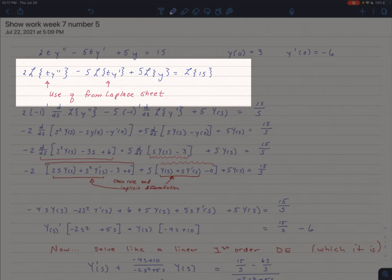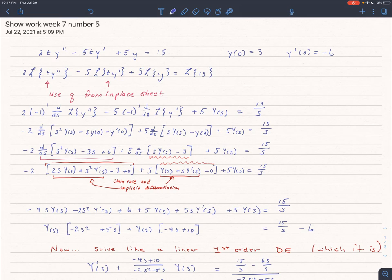I used a hint in the homework to say, hey, use q from the Laplace sheet. So when we do that, then we're going to have to take the derivative with respect to s of the Laplace transform of whatever it is that t is multiplying, or t squared or t to the third. But in this case, they were always t.